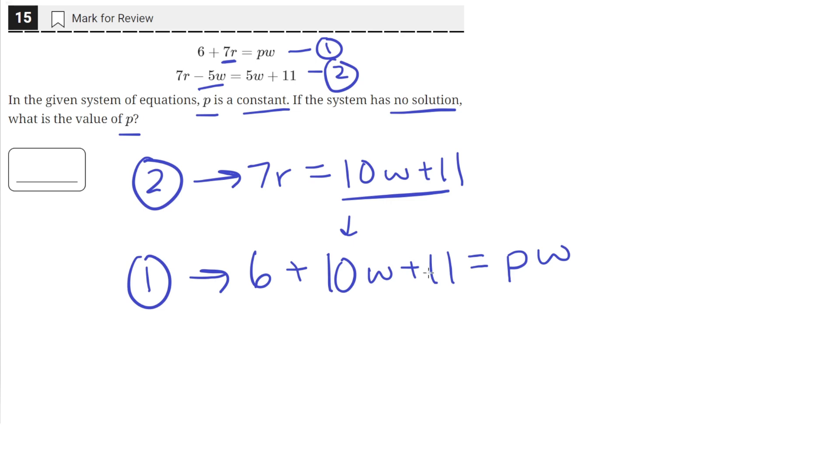Okay, so now we have an equation with only w's and constants. And in order for the system of equations to have no solution, we need to have a value of p such that the equation results in an untrue statement.